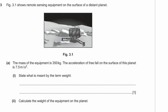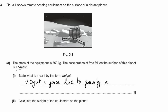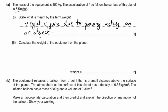Question three: remote sensing equipment on a distant planet has a mass of 350 kilograms. The acceleration of free fall on this planet is 7.5 m/s² — different from Earth's 10 m/s². The question asks what is meant by the term weight. Weight is the force due to gravity acting on an object.